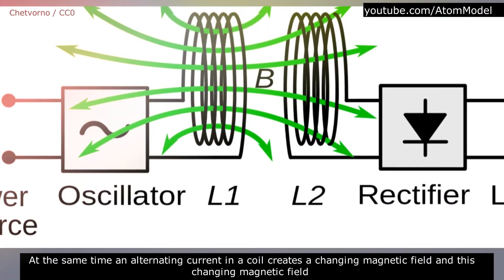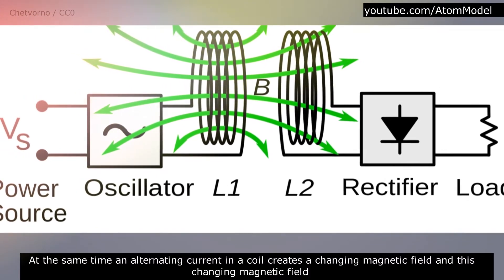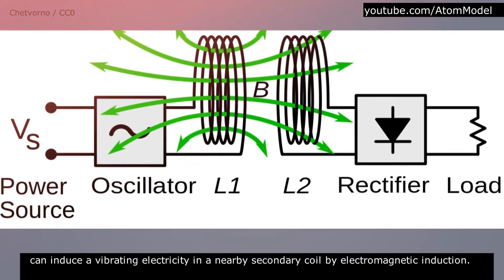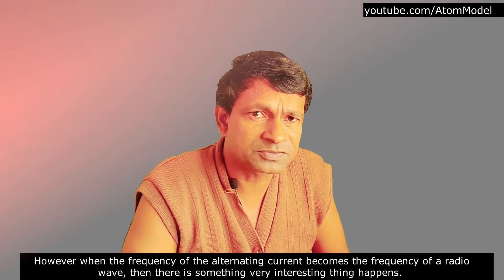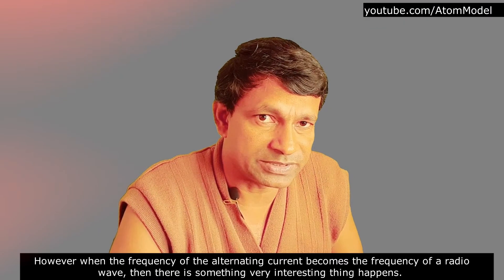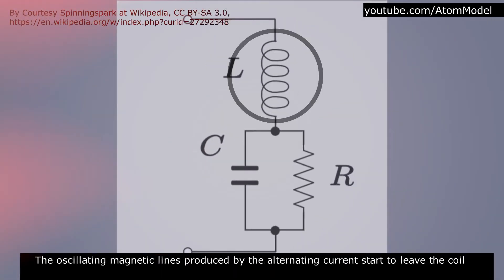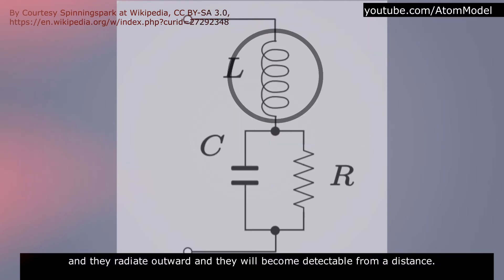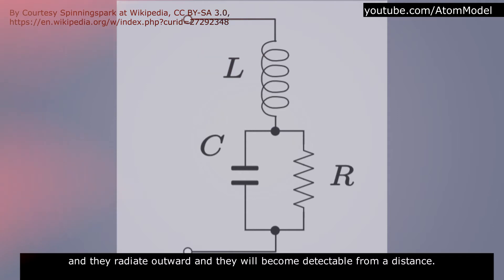At the same time, an alternating current in a coil creates a changing magnetic field, and this changing magnetic field can induce vibrating electricity in a nearby secondary coil by electromagnetic induction. However, when the frequency of the alternating current becomes the frequency of a radio wave, something very interesting happens: the oscillating magnetic lines produced by the alternating current start to leave the coil, radiate outward, and become detectable from a distance.